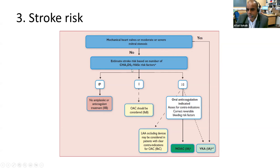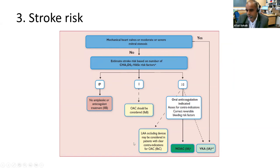If they don't have valve contraindications, you do the CHADSVAS score: zero — nothing, not even an antiplatelet; one — oral anticoagulation should be considered, and I would add 'strongly', because their risk factors will increase with age; two and above — counsel the patient for a NOAC. When NOACs aren't an option, consider vitamin K antagonists such as warfarin, or left atrial appendage occlusion devices — a little plug placed in the left atrial appendage where clots form — which we'll discuss further.